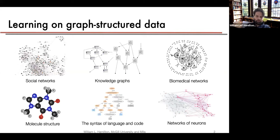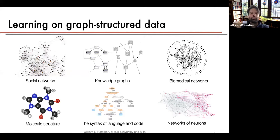When talking about graph-structured data — this being a seminar on network science — it's worth bringing up the kinds of datasets I have in mind. Social networks are an obvious one, but in addition, some really important datasets include knowledge graphs: a graph-structured representation of a relational database where nodes correspond to entities and edges are typed edges corresponding to different kinds of logical relationships between those entities. It's a very popular knowledge representation format.